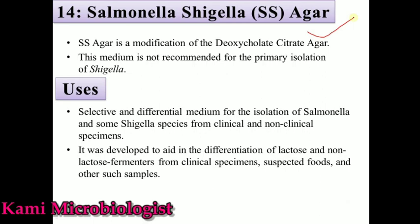Salmonella Shigella Agar is a selective or differential medium. This medium is actually derived from a media called Deoxycholate Citrate Agar, because the ingredients available in Deoxycholate Citrate Agar are also present in Salmonella Shigella Agar.